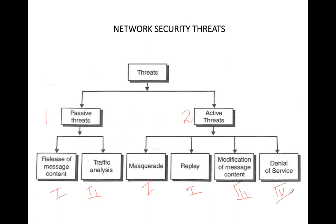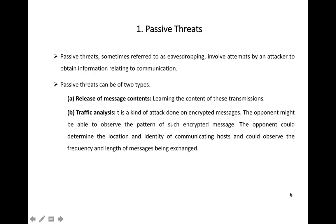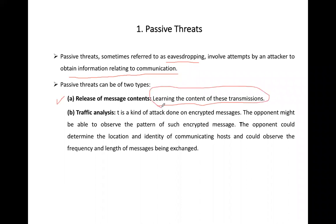Now we will discuss the threats one by one. First, passive threats — as I told you, passive threats are referred to as eavesdropping, because the attacker attempts to obtain information relating to a communication. The attacker tries to learn the content of the transmission: what is happening, what is the content, what type of data is being transmitted. The second passive threat is Traffic Analysis.